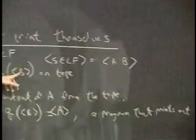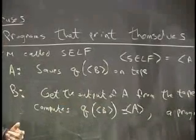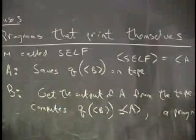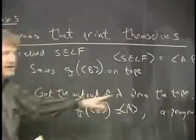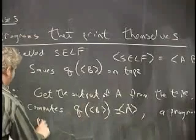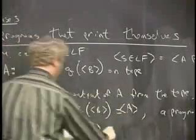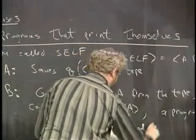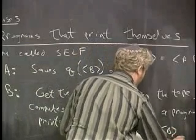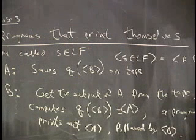So it computes this. It looks on the tape and finds the description of b. It computes a Turing machine that's supposed to print that description out. It can do that because any Turing machine can compute q of another Turing machine. And now that it's got this, now it's figured out A, here's what it does. It prints out that A followed by the b.